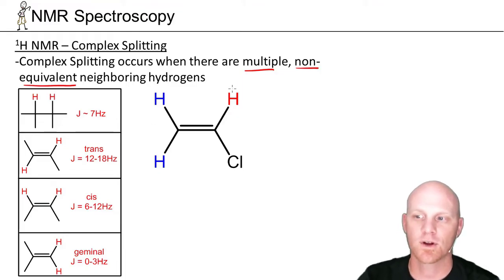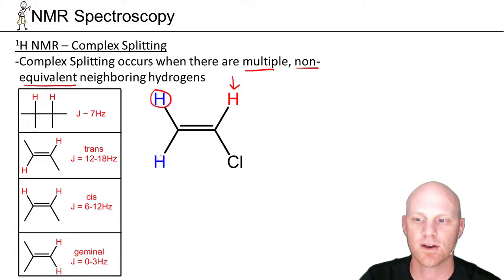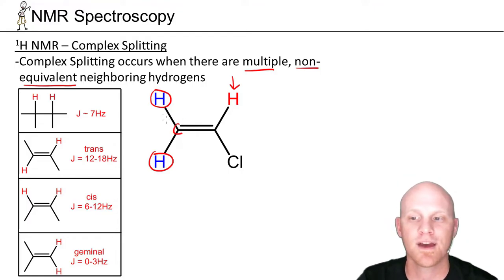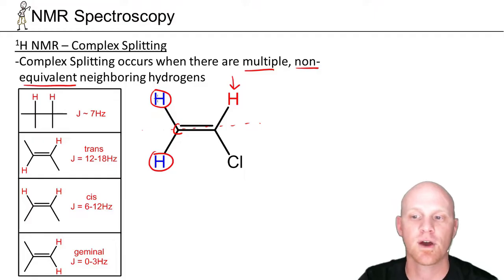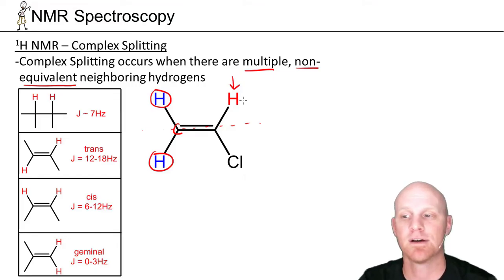We're going to look at this hydrogen in red here. It turns out it's got two neighbors — this neighbor and this neighbor. Notice these two hydrogens, even though they're attached to the same carbon, are not equivalent. Double bonds are not free to rotate and there's no symmetry in this case. The chlorine versus the hydrogen on the right side throws it off. So these two hydrogens are not equivalent, but they're both on the adjacent carbon relative to the red labeled hydrogen.